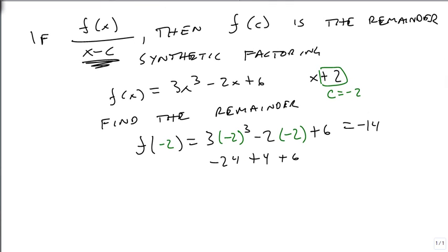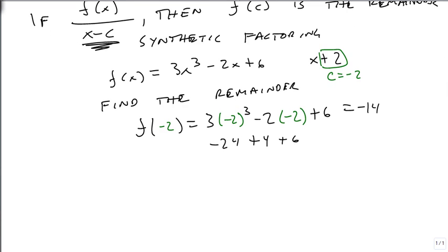Now how can we be sure if that's right? Let's try synthetic division. We put our negative 2 on the outside, and our numbers are 3, 0 (because remember we're missing the x squared), minus 2, 6. So we bring down the 3.